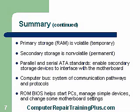That's why we need secondary storage — a hard drive — so that we can store that information. It's called non-volatile. Those are important terms: volatile and non-volatile — you might see them on a test. Parallel and Serial ATA standards enable secondary storage devices and hard drives to interface with the motherboard. The new SATA is just about double the bandwidth over the older ATA, going from 50 megabytes per second up to about 100 megabytes per second — that's what we call sustained throughput. The computer bus is a system of communication pathways and protocols. ROM BIOS helps start the PC, manage simple devices, and change some motherboard settings.